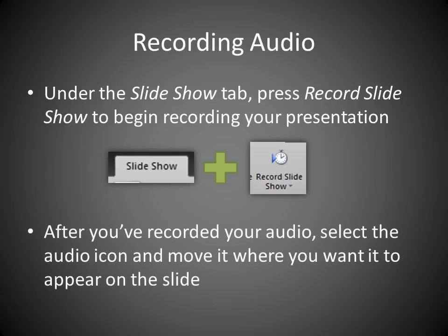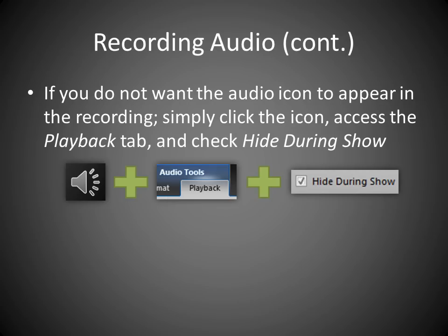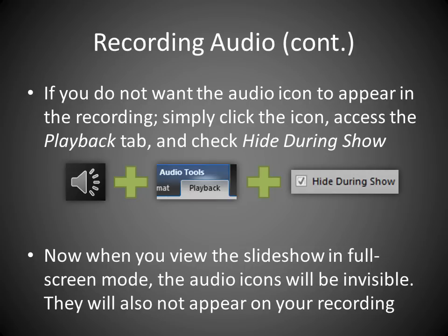After you've recorded your audio, select the audio icon and move it where you want it to appear on the slide. If you do not want the audio icon to appear in the recording, simply click the icon, access the Playback tab, and check Hide During Show. Now when you view the slideshow in full screen mode, the audio icons will be invisible. They will also not appear on your recording.